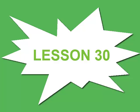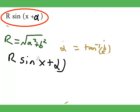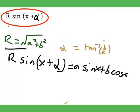Then, we can, after all that moving, we can happily say that R sin of x plus alpha is equal to a sin x plus b cos x, where R equals that and alpha equals that.